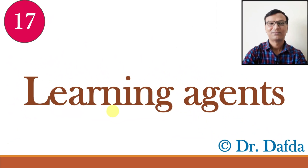Starting with the name, why are these agents called Learning Agents? They are called Learning Agents because they can learn and improve over time. In our previous classes, we discussed different types of agents like simple reflex agent, model based reflex agents, goal based agents, and utility based agents. All these agents can also be Learning Agents, meaning they can learn and improve over time. So Learning Agents are the next level of Artificial Intelligence — they can improve their performance by learning from experiences, just like we humans do.